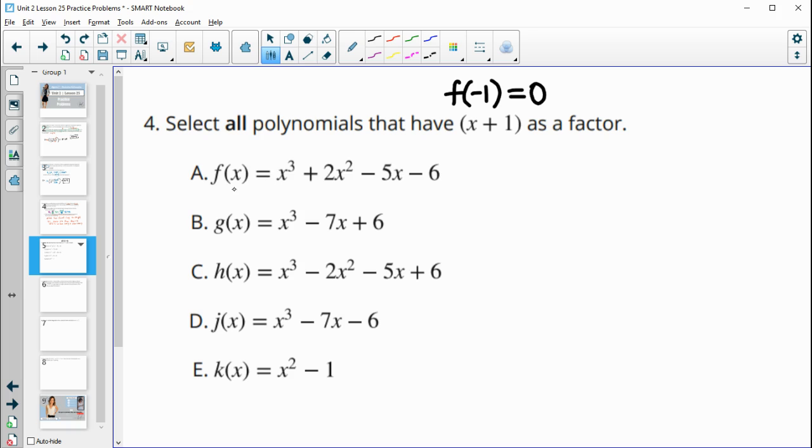So we're going to do this in each problem. So we're going to plug negative 1 in here. So negative 1 to the 3rd is negative 1. Negative 1 squared is positive 1 times 2 is plus 2. Negative 5 times negative 1 is positive 5. And then we have the negative 6. If we add all of that together, we get 0. So this one has X plus 1 as a factor. Because f of negative 1 equals 0.